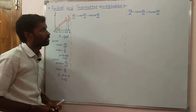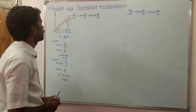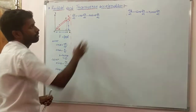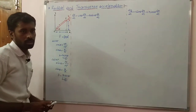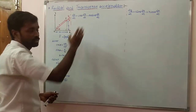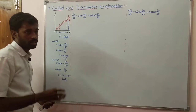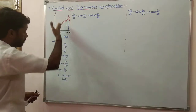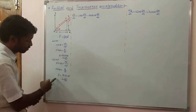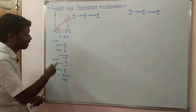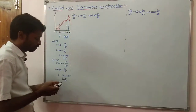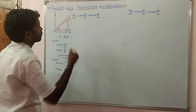Hi everyone, this is Vinaydu. Today our topic is to find out radial and transverse acceleration. In the last class, we found out radial and transverse velocity. In that class we explained how to get x equal to r cos theta and y equal to r sin theta, then we found out dx/dt and dy/dt. Now our aim is to find out d²x/dt².